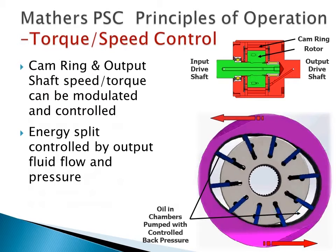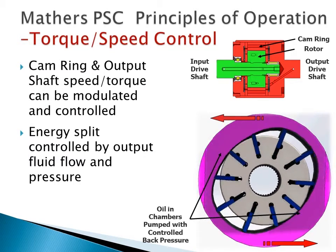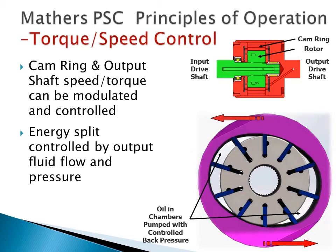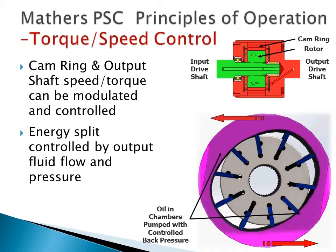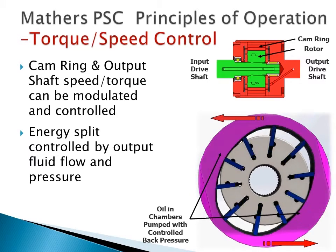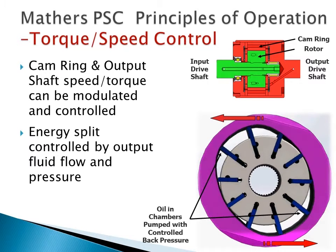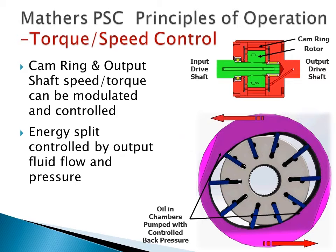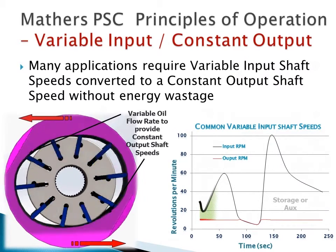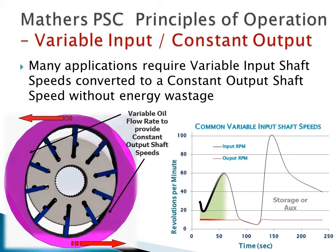This example shows varying input shaft speed and power while maintaining a constant output shaft speed and power. This is achieved by simply modulating the pressure of the output fluid flow. To represent this output shaft control, the same animation is shown with the aid of an animated graphical timeline. Note the shaded green area is representative of the energy within the power split high-pressure fluid flow.